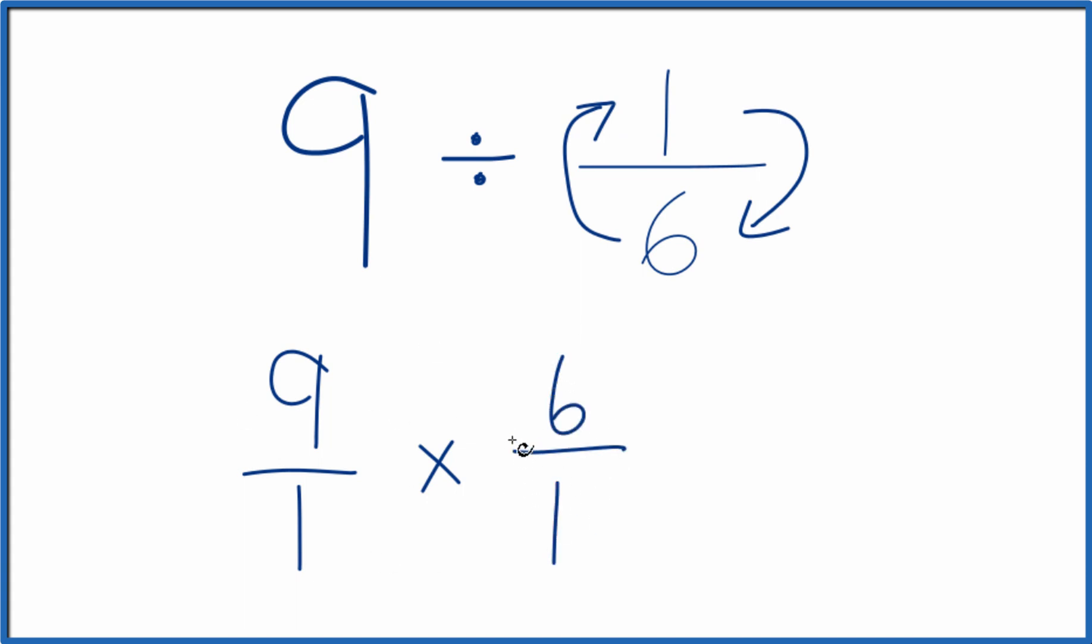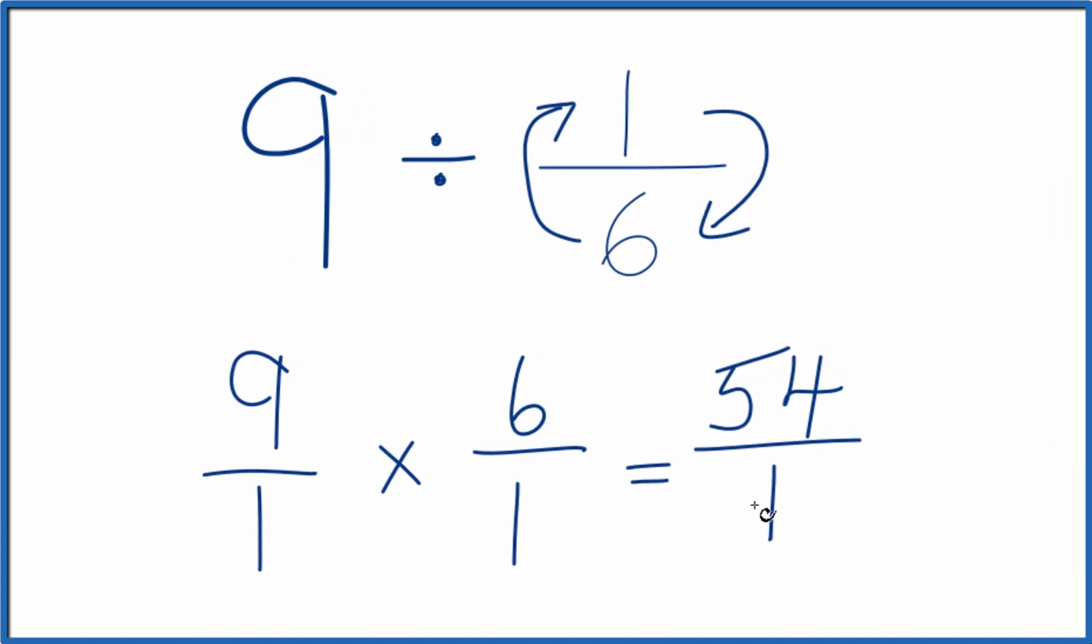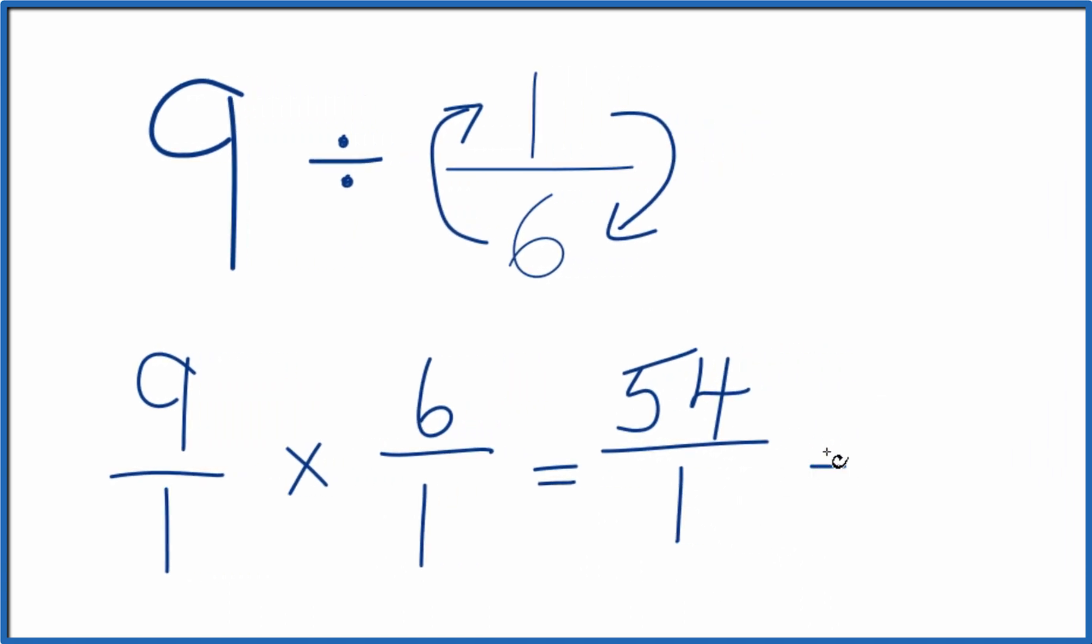When we're multiplying these fractions, we just multiply the numerators and then the denominators. 9 times 6 is 54. 1 times 1 is 1. And 54 over 1 equals 54.